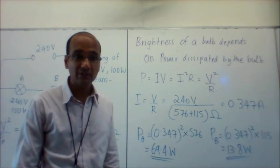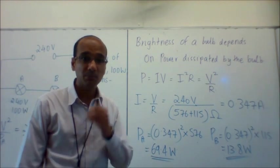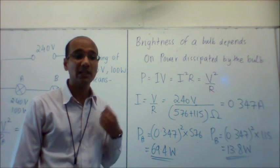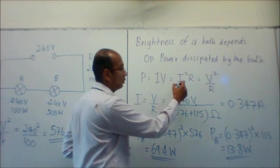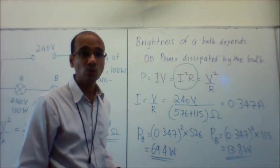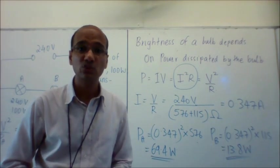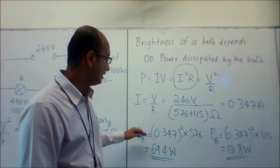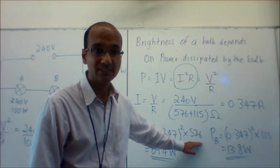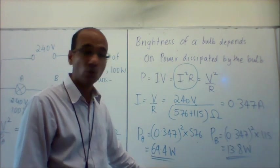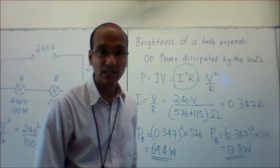Now that I have the current, I can work out the power dissipated by bulb A and bulb B, and ultimately compare their brightness. I'll use the formula power equals I squared R, since I know the resistance for each bulb and the current. Power of A is 0.347 squared multiplied by 576, which gives 69.4 watts. Power of B is 0.347 squared multiplied by 115,